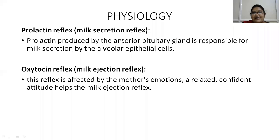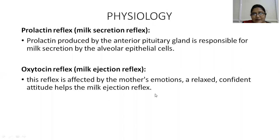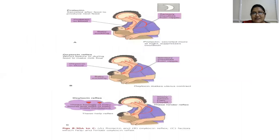Coming to the physiology of lactation, we have the prolactin reflex — also known as the milk secretion reflex — and the oxytocin reflex or milk ejection reflex. Prolactin is produced by the anterior pituitary gland and is responsible for milk secretion by alveolar cells. When the baby circles the nipple and areola, sensory impulses from the nipple reach the brain and prolactin is secreted. Prolactin is secreted during night times and after a feed to produce the next feed.